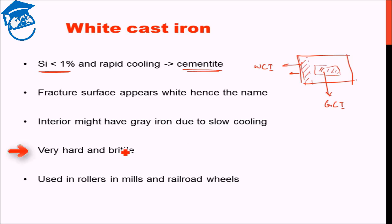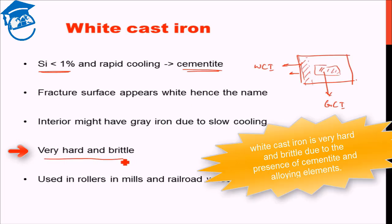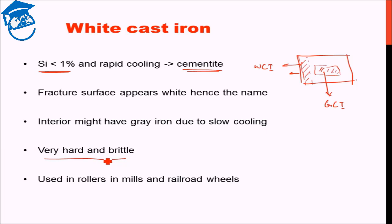White cast iron, due to the presence of cementite and alloying elements, is very hard and brittle, mainly due to cementite presence. Its hard nature leads to wear resistance properties, and that is why it is used in rollers in mills — for rolling purposes you need better resistance to wear. Also in railroad wheels: if the wheels were to wear out very easily while the train moves, that would lead to catastrophic failure. So we want something with very good wear properties, and white cast iron with the presence of cementite provides those properties.